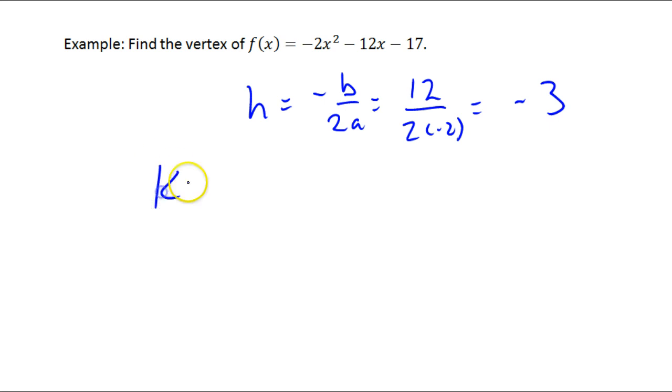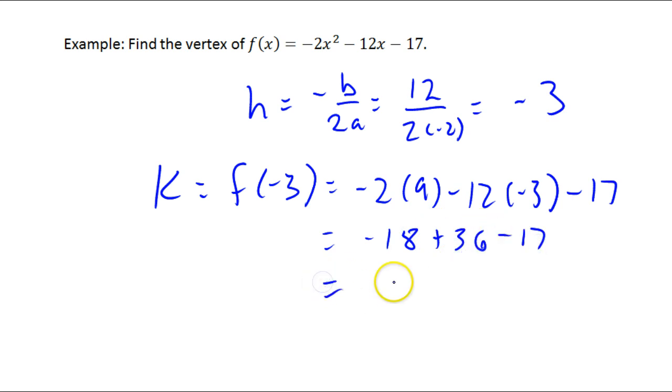The y coordinate k is what we get when we plug in negative 3 into our function. So it will be negative 2 times 9, minus 12, times negative 3, minus 17. That's going to be negative 18, plus 36, minus 17. And that's negative 35, plus 36 is 1. So the vertex is at negative 3, 1.